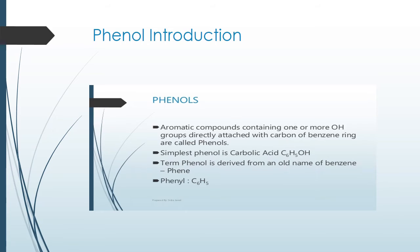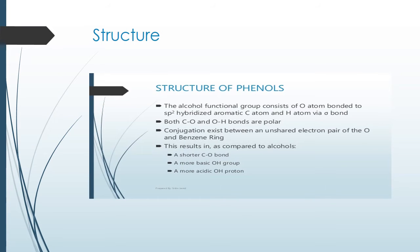Phenols are basically aromatic compounds containing a hydroxyl group directly attached to a benzene ring carbon. More than one OH may be present, but the simplest phenol — with a single OH — is called carbolic acid. The term phenol comes from 'phenyl' (C₆H₅), which is the old name for benzene.